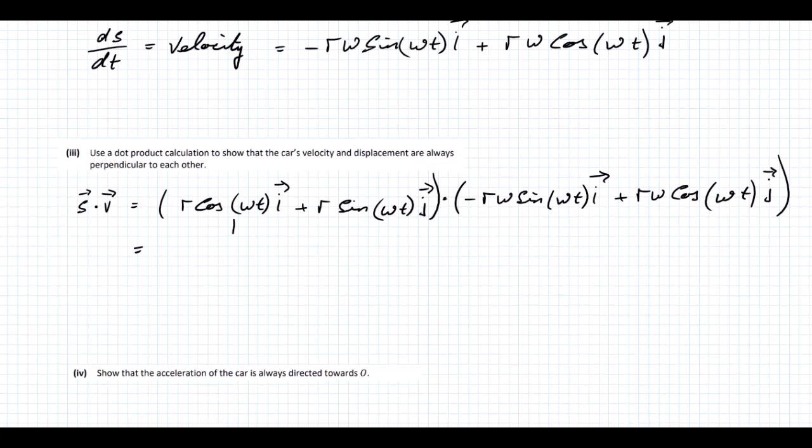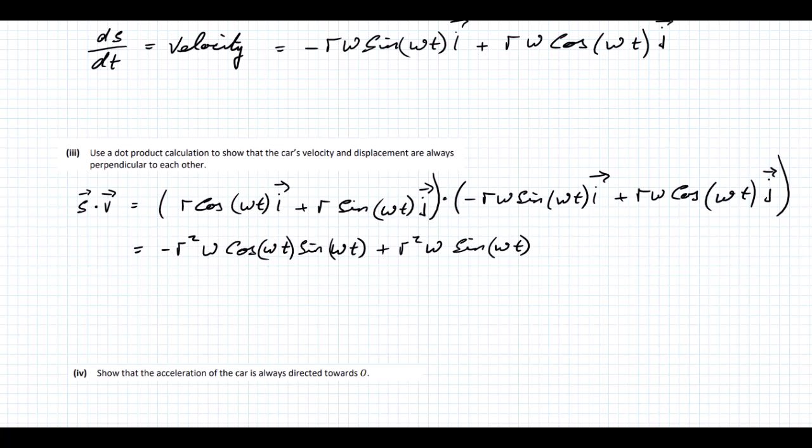To do the dot product, we just multiply that by that and that by that. We have R times minus R, that's minus R squared omega cos omega T sine omega T. And when we do these two, we get plus R squared omega sine omega T cos omega T.